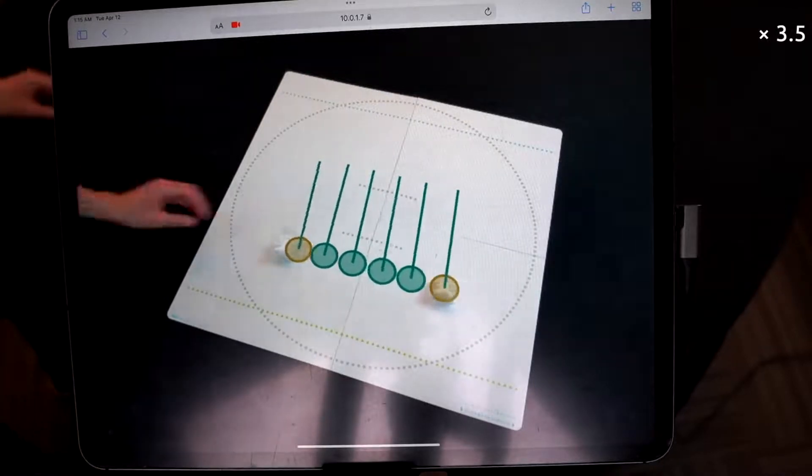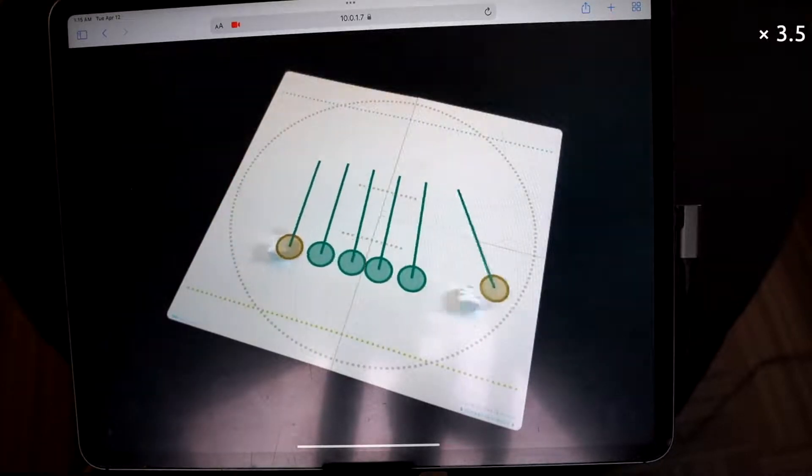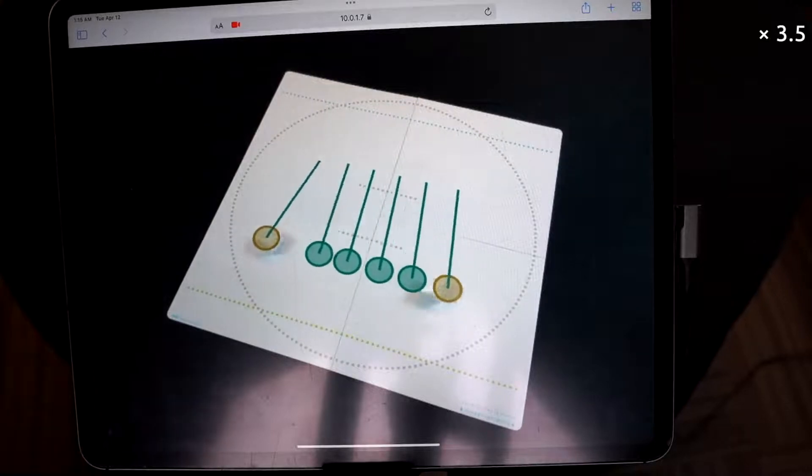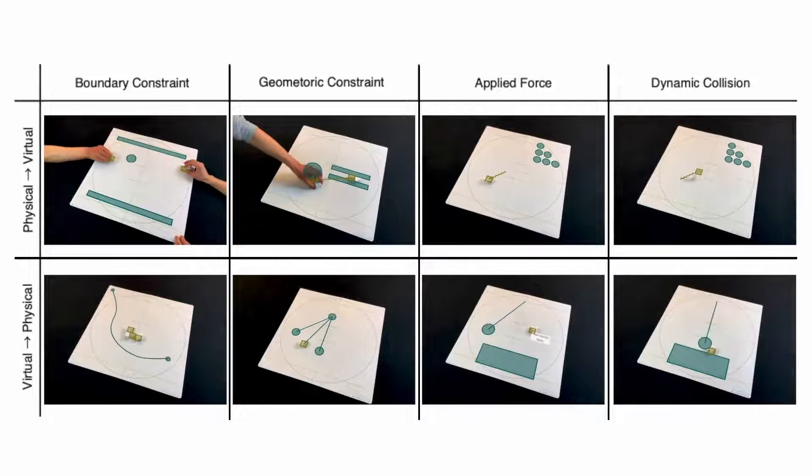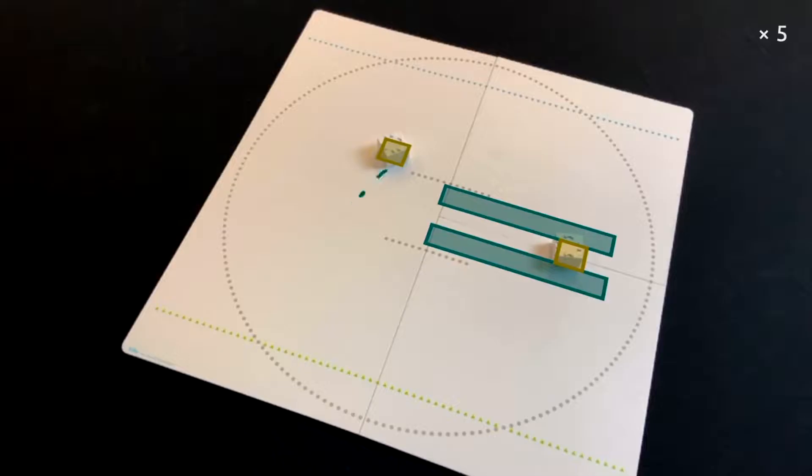In our system, virtual sketches drawn and simulated on an iPad—for example, lines, walls, pendulums, and springs—can move, actuate, collide, and constrain physical Toyo robots, as if virtual sketches and physical objects exist in the same space through seamless coupling between augmented reality and robot motion.